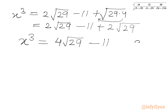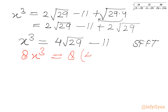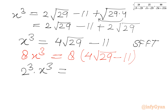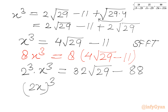Now I will use Simon's Favorite Factoring Trick. I need to multiply both sides by 8. So 8x³ = 8(4√29 − 11). Expanding the right-hand side gives 32√29 − 88. On the left-hand side we can write 8x³ = 2³ · x³ = (2x)³ using exponential properties.